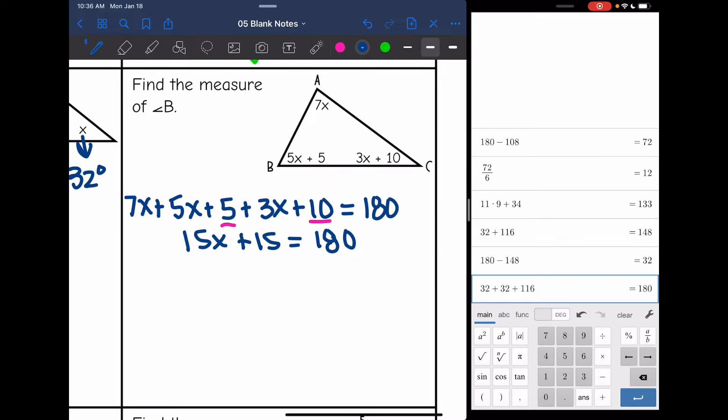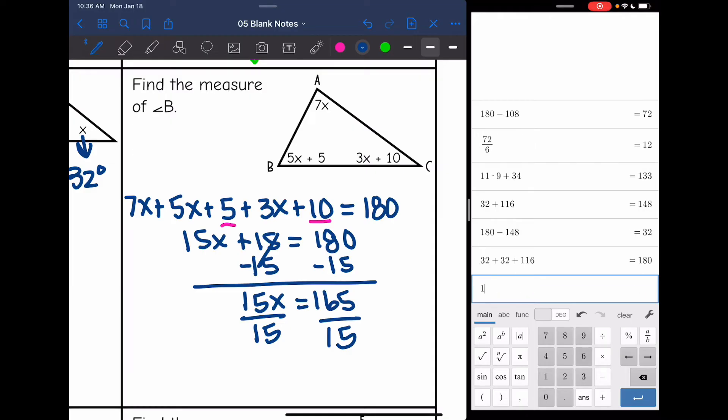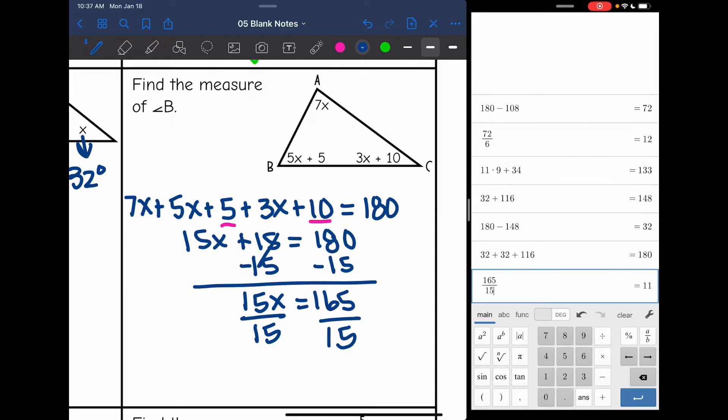Now I'm going to subtract 15. And I get 15x equals 165. And then I need to divide by 15. And 165 divided by 15 is 11. So x equals 11.